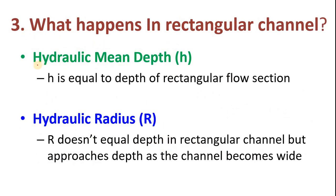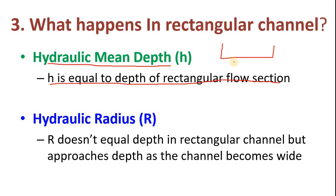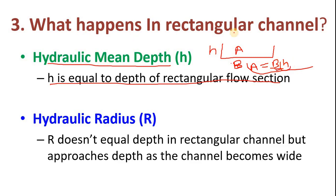Now what happens in a rectangular channel for hydraulic mean depth and hydraulic radius? In a rectangular channel, B is the top width and H is the depth of flow. Area equals B times H. When area is divided by top width T, which equals B, we get H. So in a rectangular channel, hydraulic mean depth equals the depth of flow.